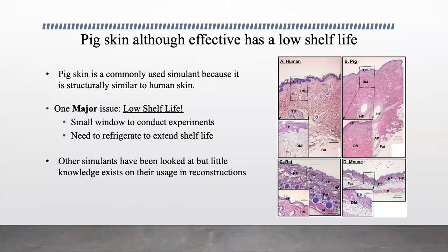However, a large issue when working with pig skin is that it has a low shelf life, meaning that experiments must be done quickly before the pig skin degrades. Pig skin may also be difficult to store due to having to be refrigerated. Some alternative skin simulants that have been looked into include synthetic polymers and chamois cloth. However, there is a lack of knowledge as to whether or not they are effective in reconstructions.